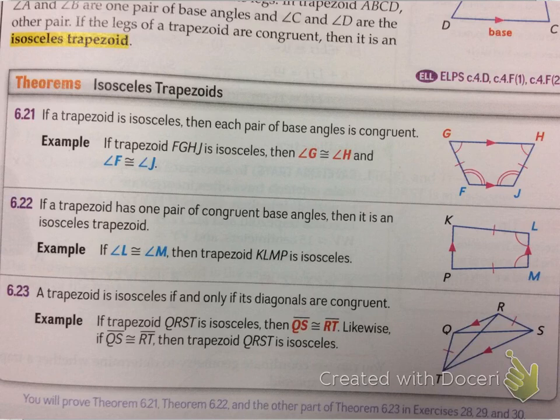If a trapezoid has one pair of congruent base angles, then it is an isosceles trapezoid. So kind of a converse. If I say that the angles are congruent, then I know that the legs are congruent. And I know that this is an isosceles trapezoid.